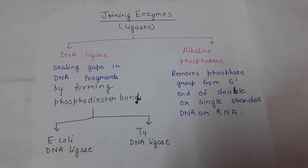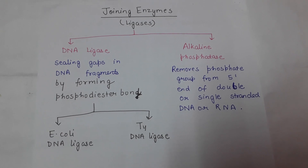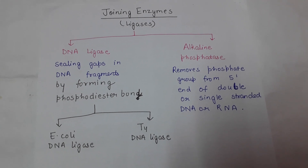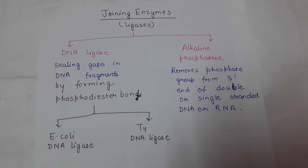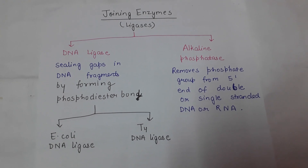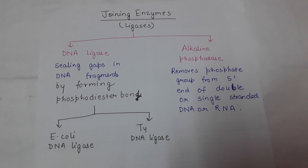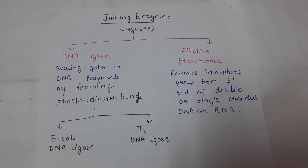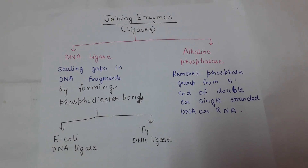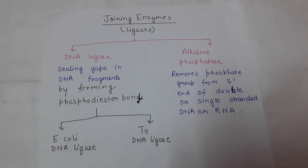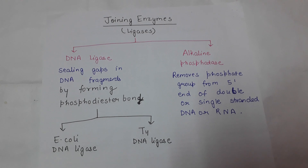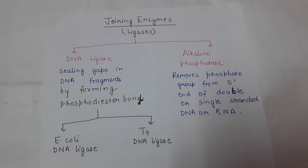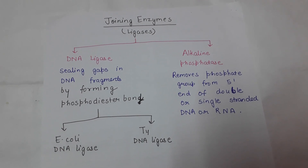To recap: E. coli DNA ligase cannot ligate blunt ends, whereas T4 DNA ligase can ligate blunt ends. Another joining enzyme is alkaline phosphatase, which removes the phosphate group from the terminal 5' end of double- or single-stranded DNA and RNA. After removal of the phosphate group from the 5' end, it helps in the formation of phosphodiester bonds, and in this way it acts as a joining enzyme.